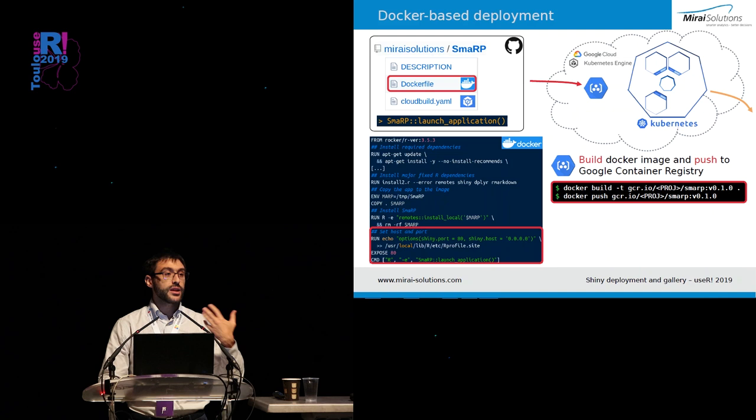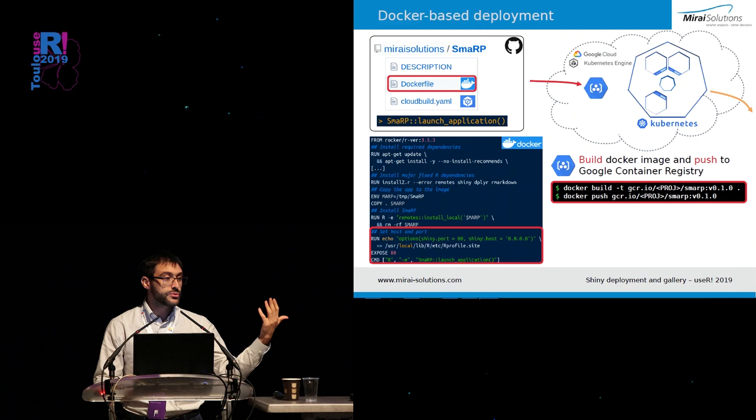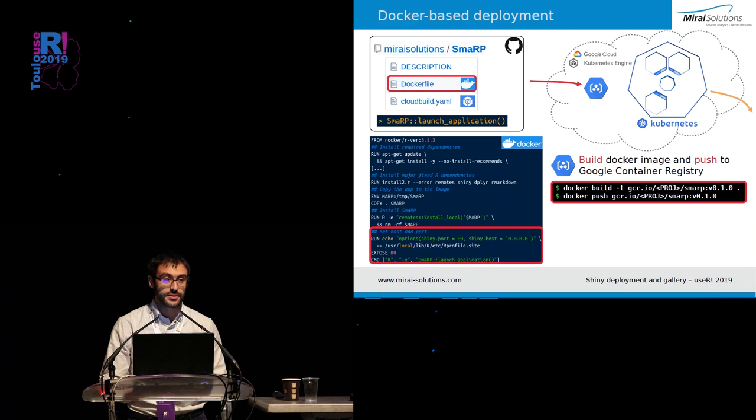If we want to bring this to Kubernetes, we need to build the image and make it available on a container registry. The natural choice here was Google Container Registry. This is done using Docker build and Docker push, and if you attended the tutorial from yesterday, you should already be familiar with these techniques.